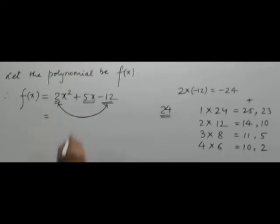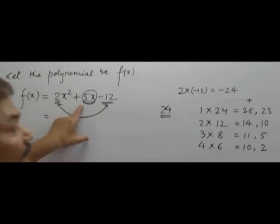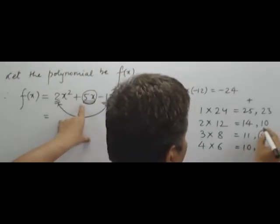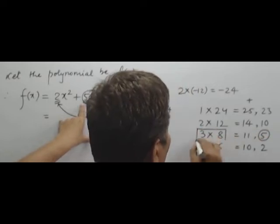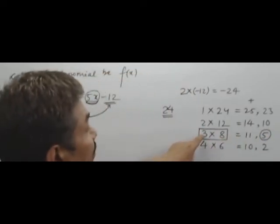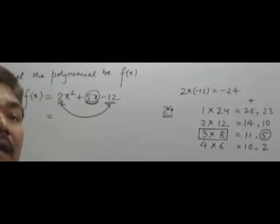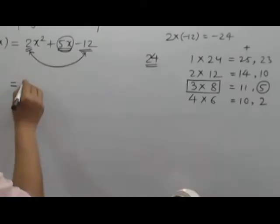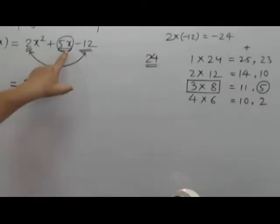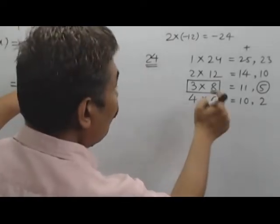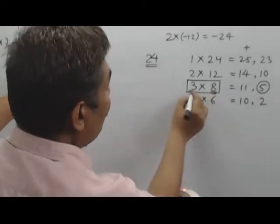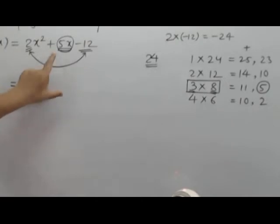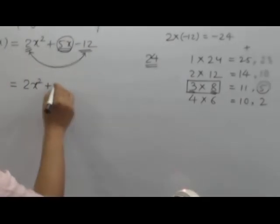क्योंकि हमें जो middle term है वो कितना है? 5 है। तो 5 कहाँ आ रहा है? 5 आने के लिए हमें इसे दो भागों में बाँटना होगा — मतलब 3 और 8 में split करना होगा। और इसलिए हम लोग इसको लिख सकते हैं — क्योंकि plus में लाना है — 2x² में, 5x को plus में लाने के लिए 8 को plus में लिखेंगे और 3 को minus में लिखेंगे।